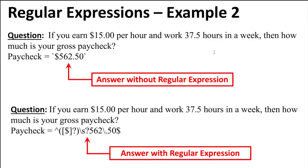Here's a different type of question. It says: if you earn fifteen dollars per hour and you work thirty-seven and a half hours in a week, then how much is your gross paycheck? The answer is five hundred sixty-two dollars and fifty cents. A student might put a dollar sign or might not; there might be a space between the dollar sign and the five. Instead of trying to think of all the possibilities, I can use regular expressions to code the answer. I'll show the code on a separate slide.